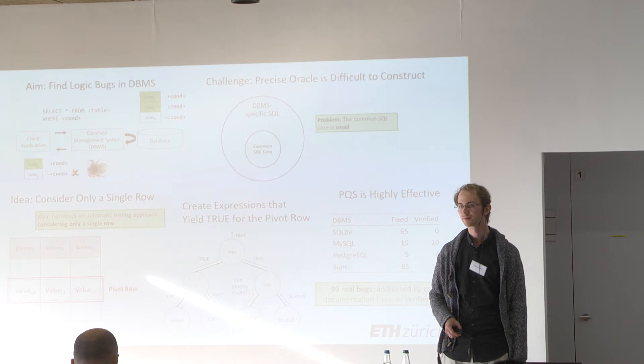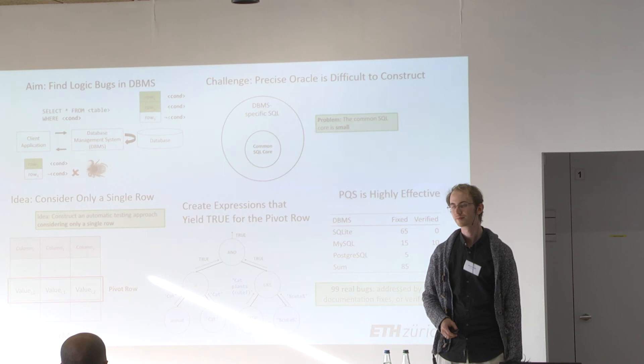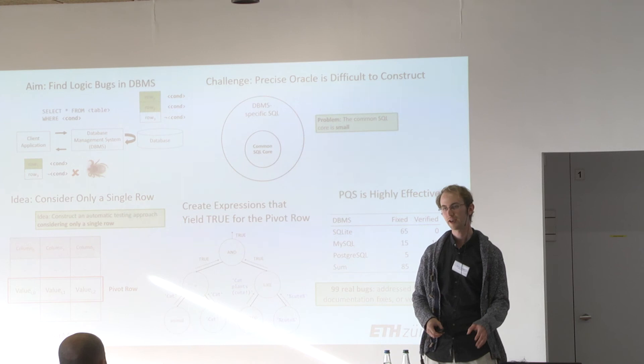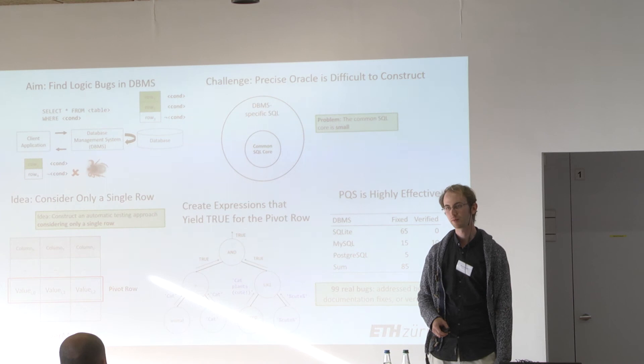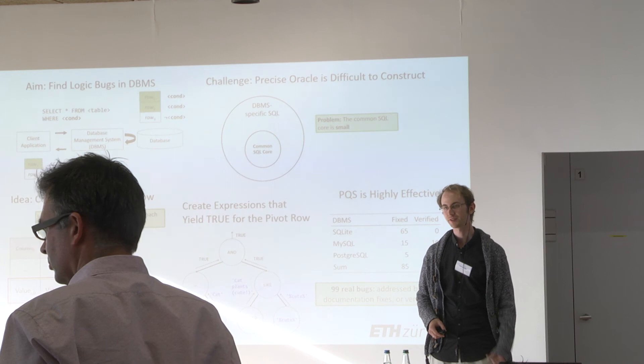Audience question: You create expressions that yield true and check that the pivot row is contained. Do you also try expressions that yield false and verify the row is correctly not contained? Speaker: We haven't tried it yet, but I think it would work to find additional bugs — namely when the pivot row is fetched although it shouldn't be. We will definitely try this still.